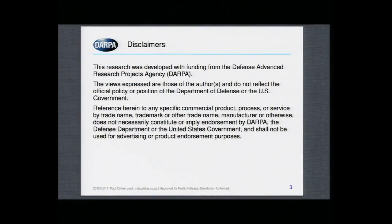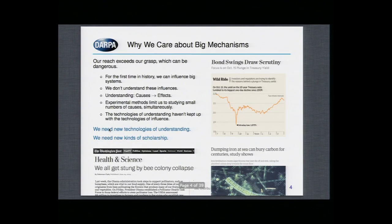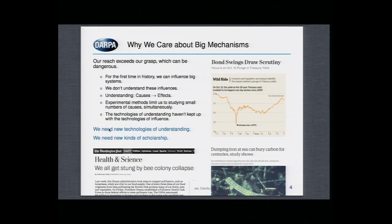I have to put this slide up. Last October, government-backed treasury bills lost seven standard deviations in their value in about two minutes. And two minutes later they recovered their value. This was caused by a flash crash.